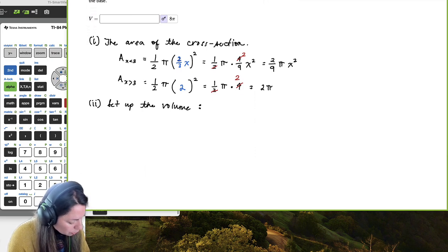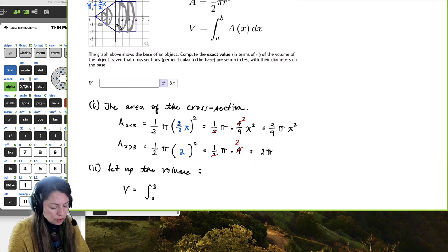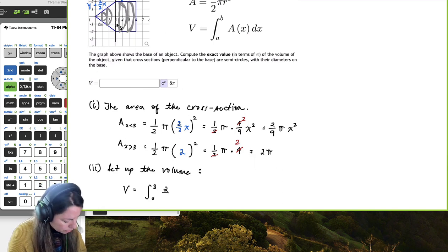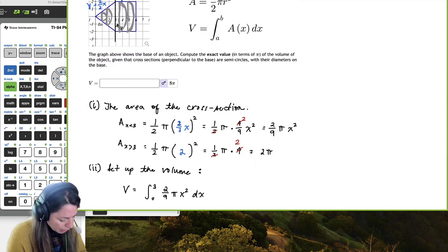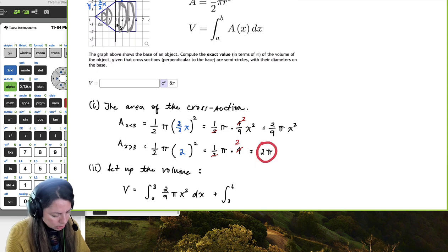Okay, so the volume is going to be equal to the first piece here, from zero to three, of the area of the cross section, which would be two-ninths pi x squared, dx, plus the integral of the one from the right of three, which is three to six, of, again, our area of our cross section two pi dx.